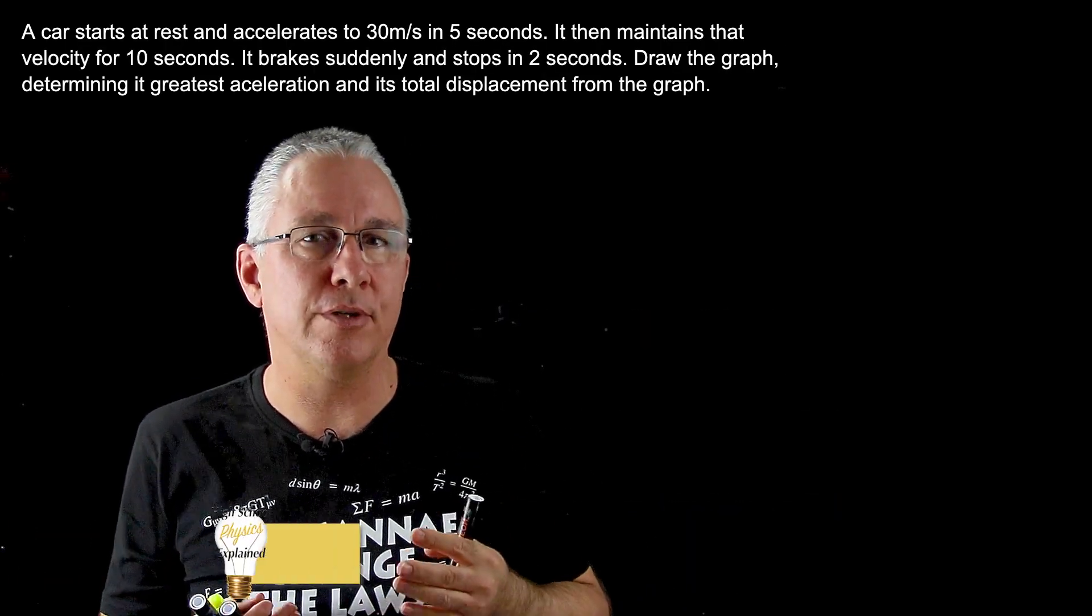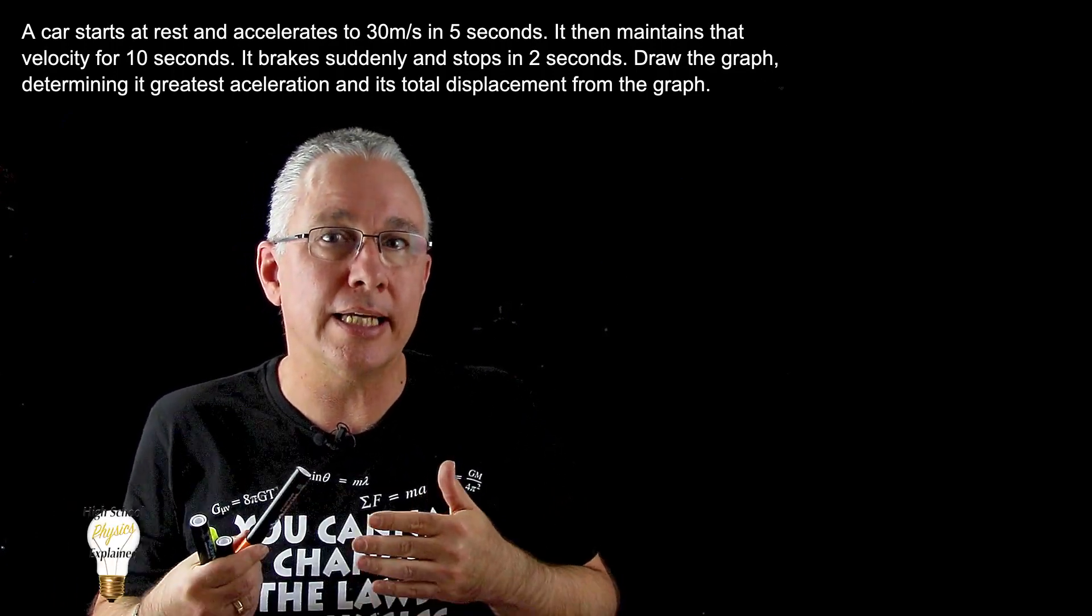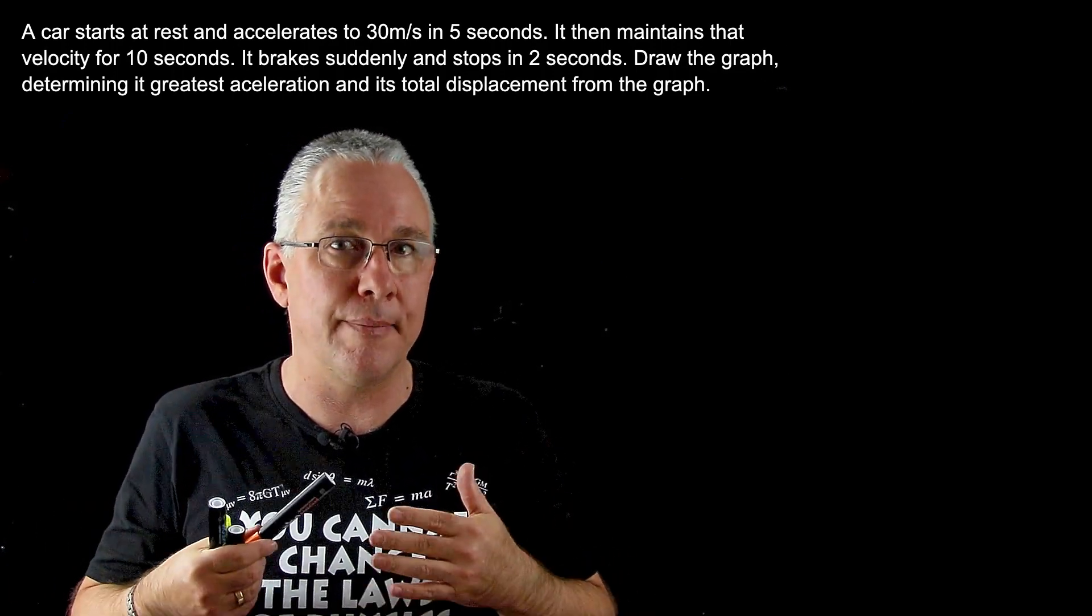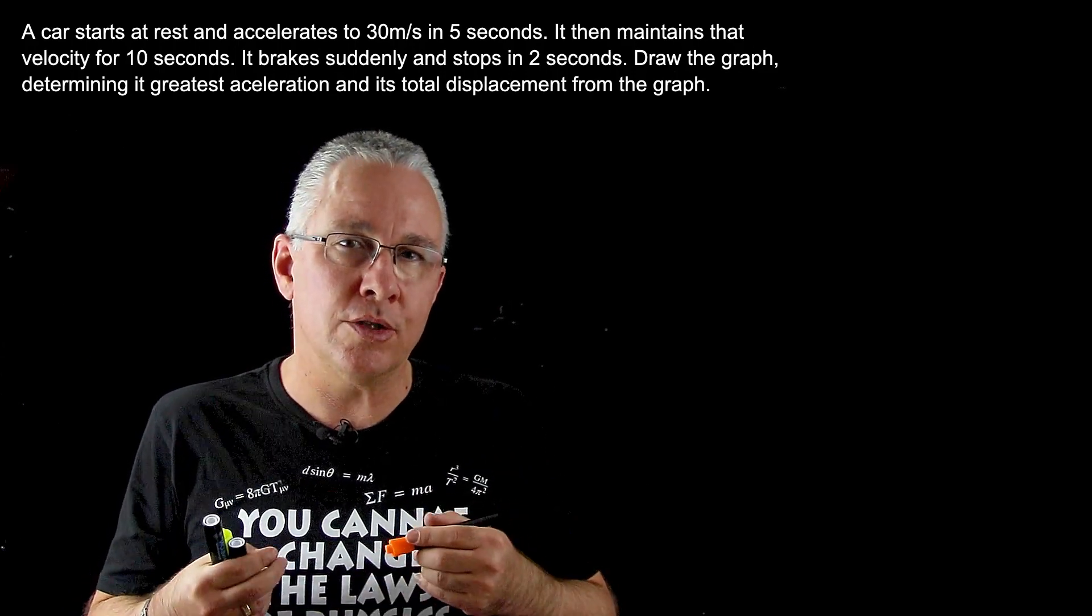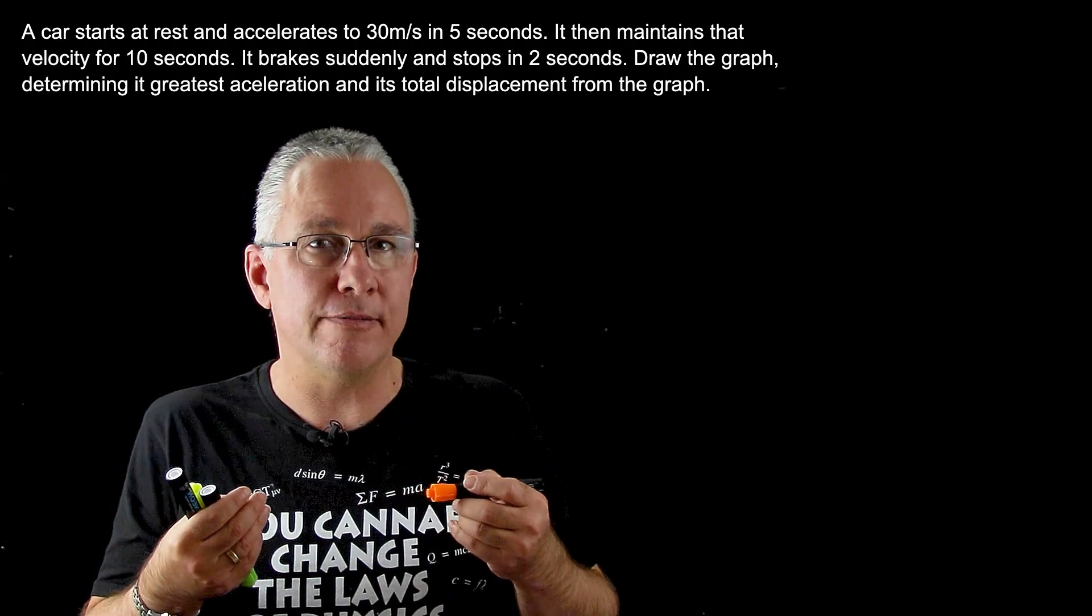This is a fairly straightforward graphical analysis problem. We've got a car that is accelerating, staying at a constant velocity, and then coming to a stop. To look at the variables we need, we're going to draw a velocity-time graph.